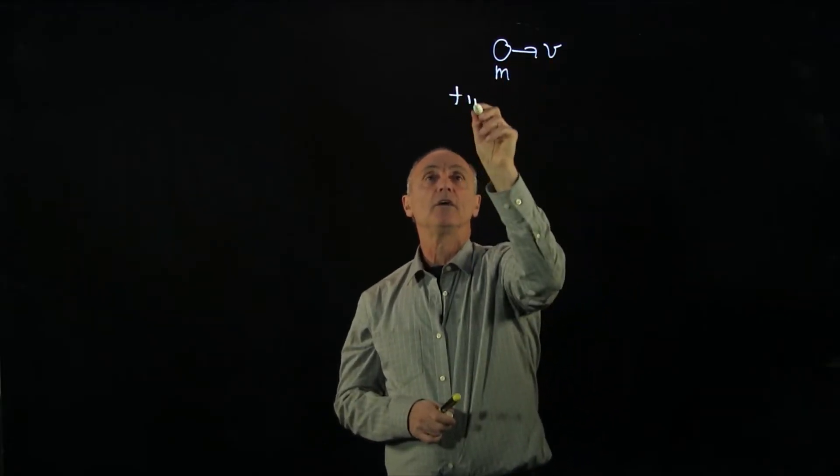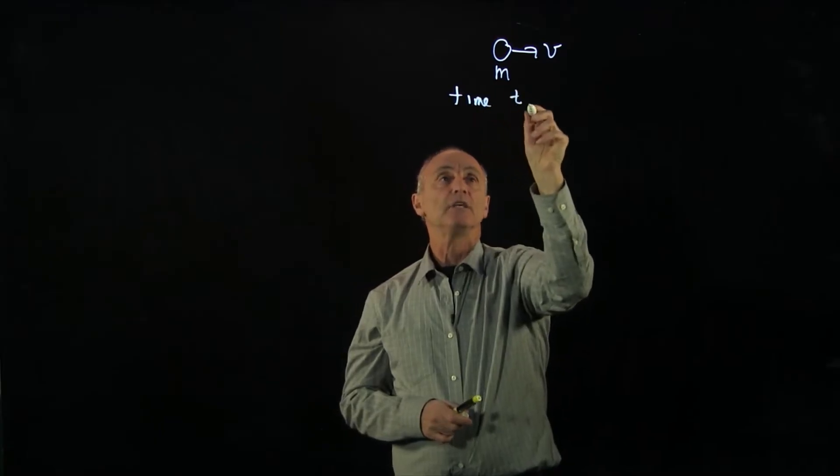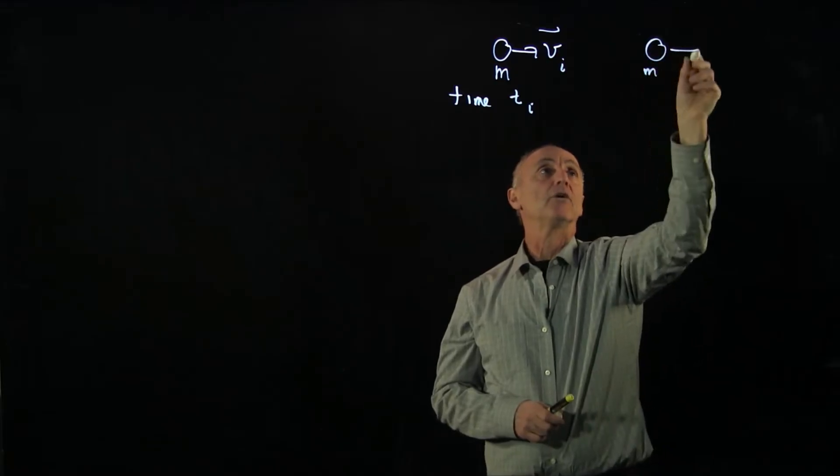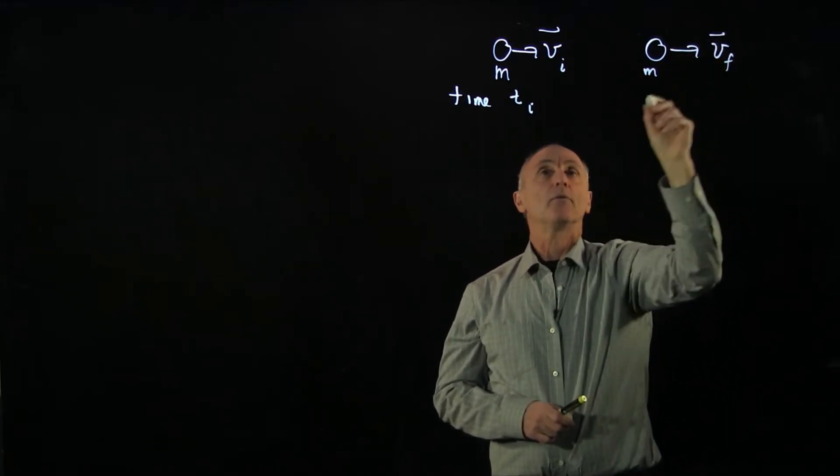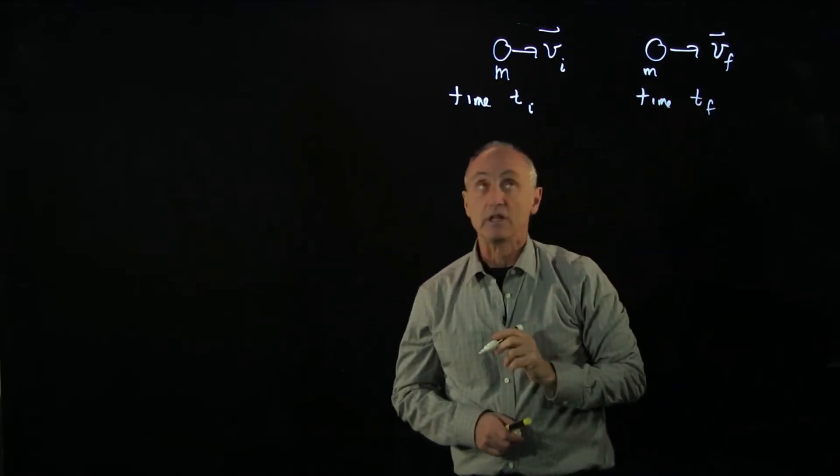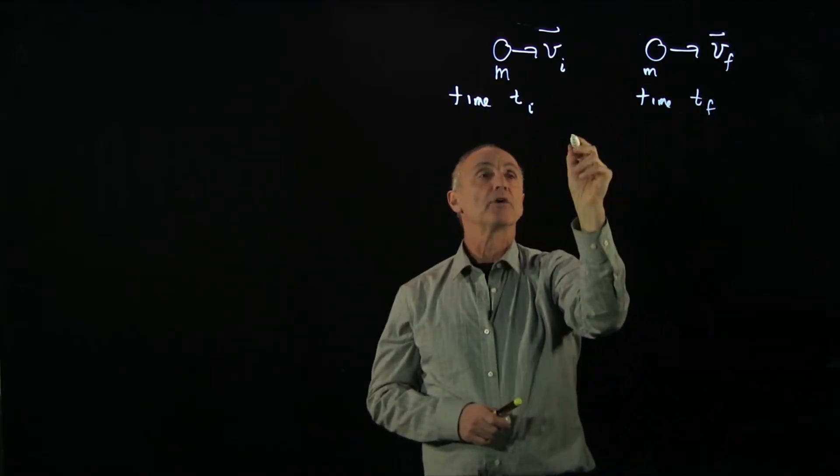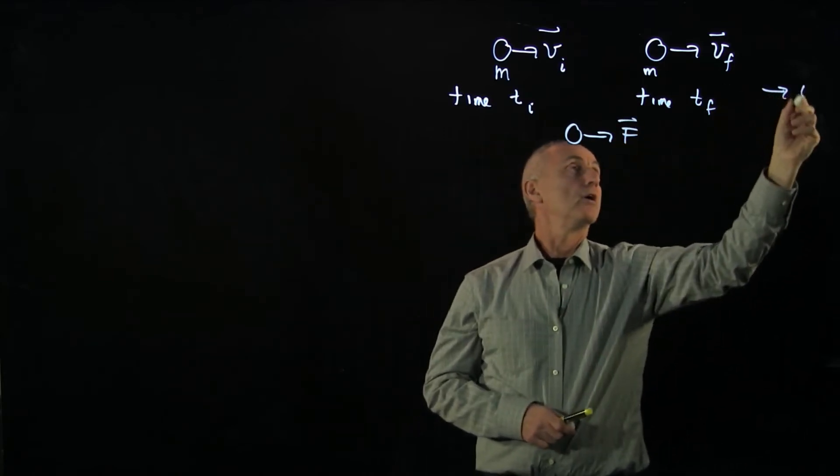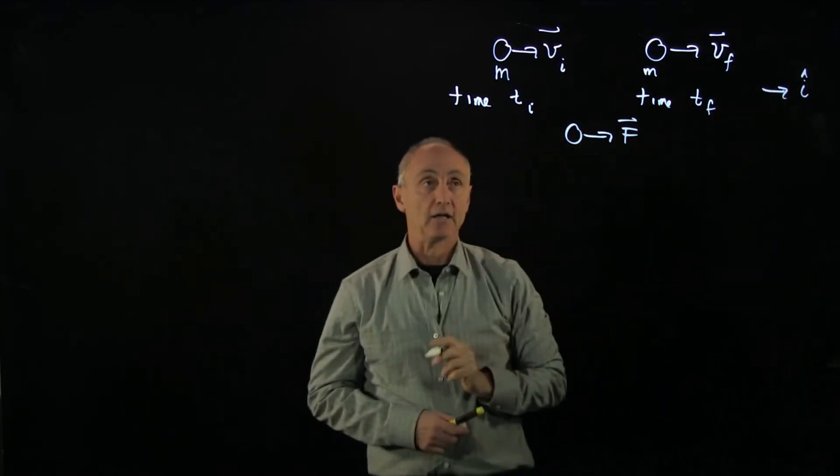And let's say here the picture as t initial and we have some initial velocity. And then a little bit later in time, we have a time t final, the moment the velocity has changed, and that's because throughout this time interval, we're applying an impulse. We can call this the i hat direction.